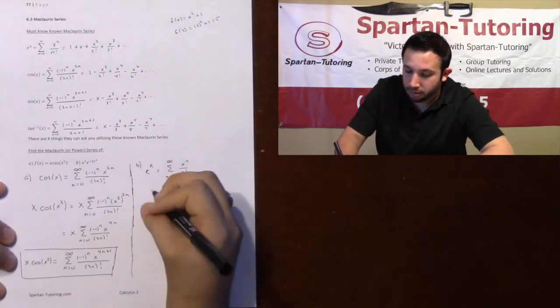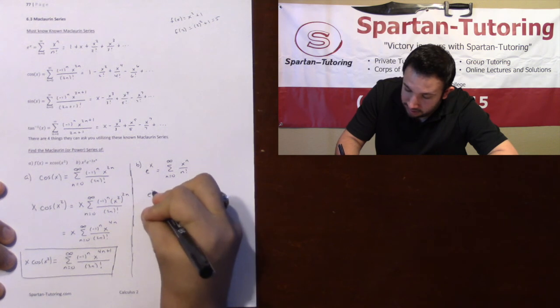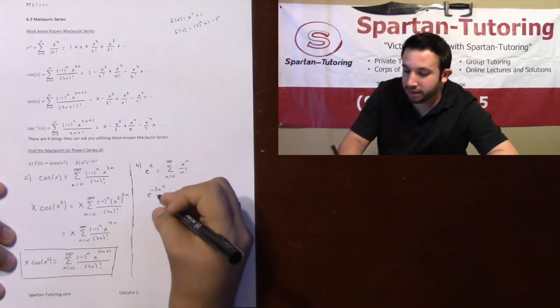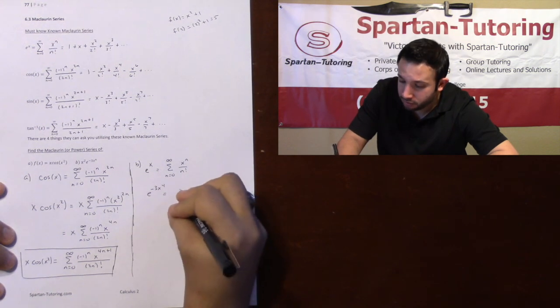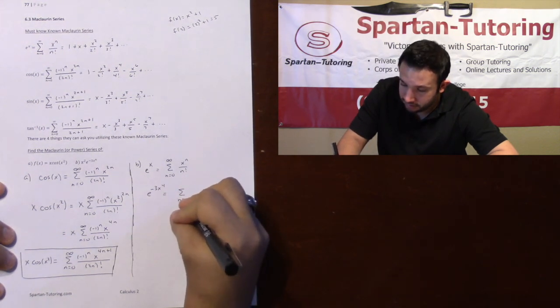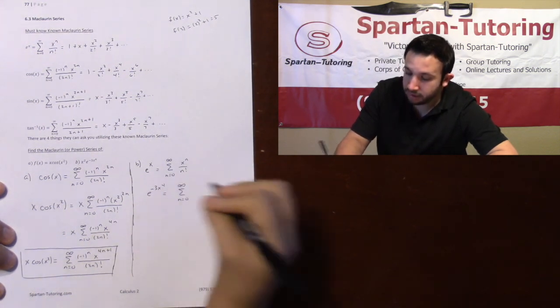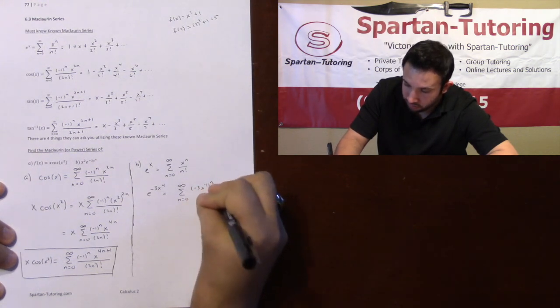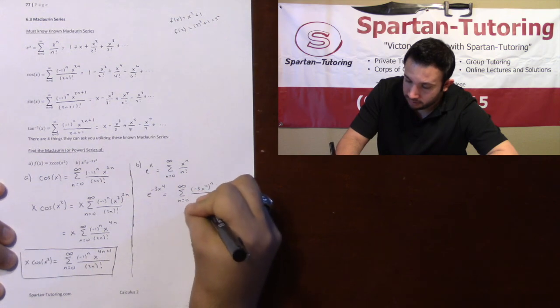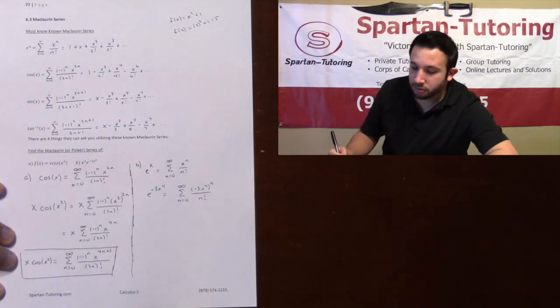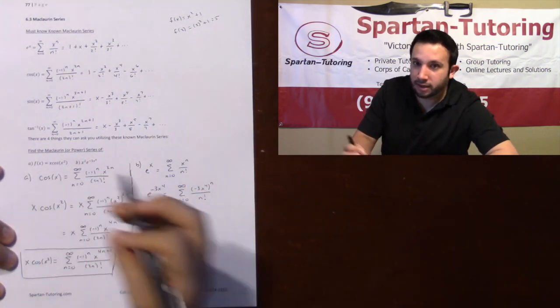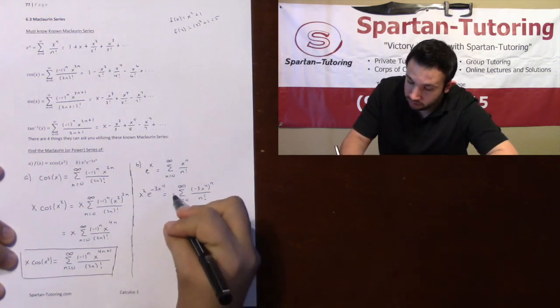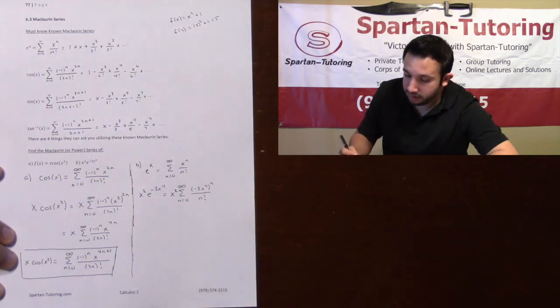So e to the X is going to be the sum from N equals 0 to infinity of X to the N over N factorial. Therefore, first, I'm going to replace e to the X with e to the negative 3X to the 4th. And how do I find e to the negative 3X to the 4th? We'll just replace every X with the negative 3X to the 4th. So negative 3X to the 4th raised to the N over N factorial. And then finally, don't forget you have an X squared on the outside.